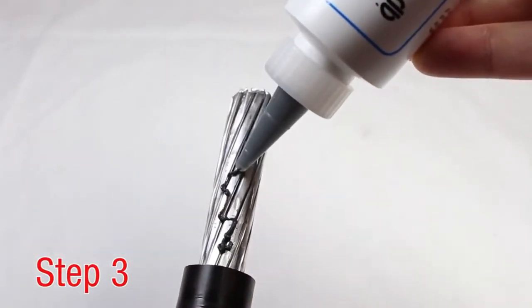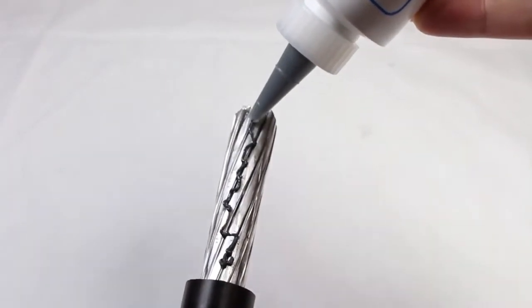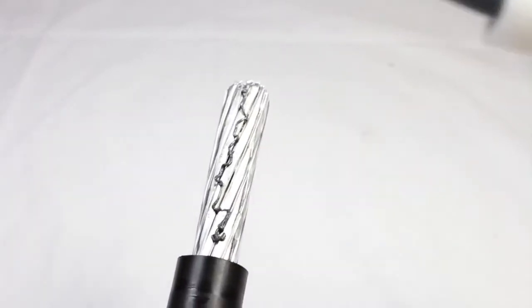Apply penetrox to the conductor to prevent the formation of surface oxides once the connection is made.